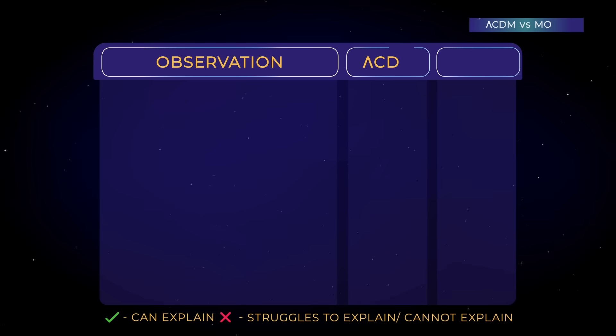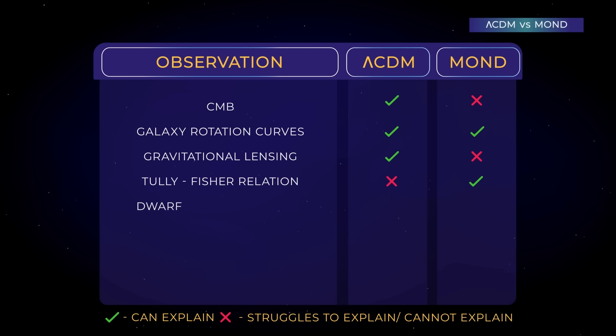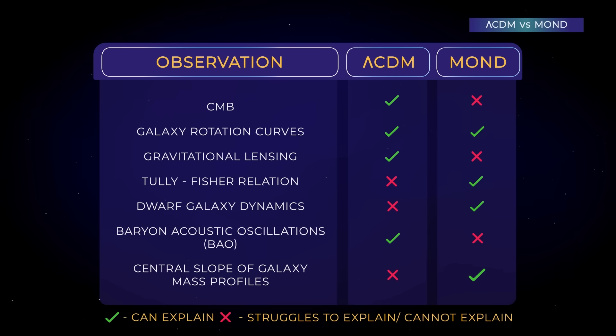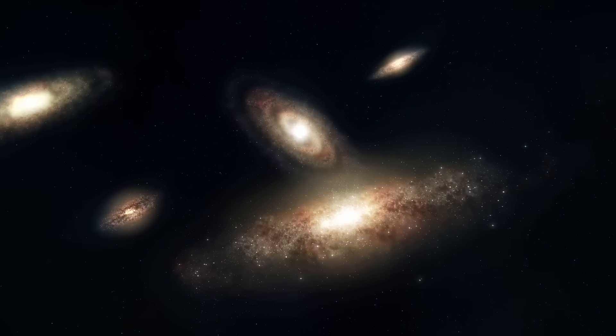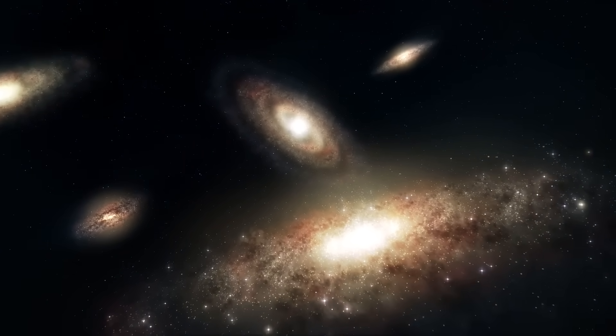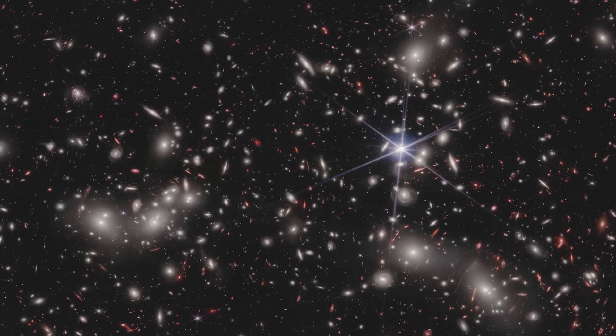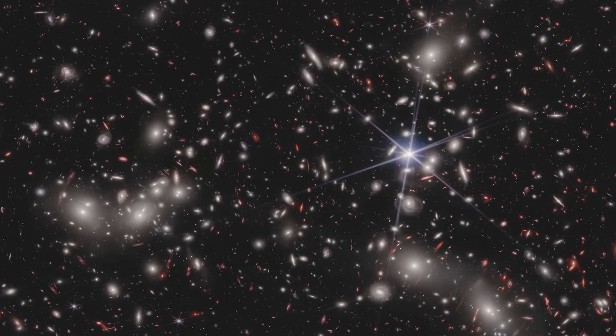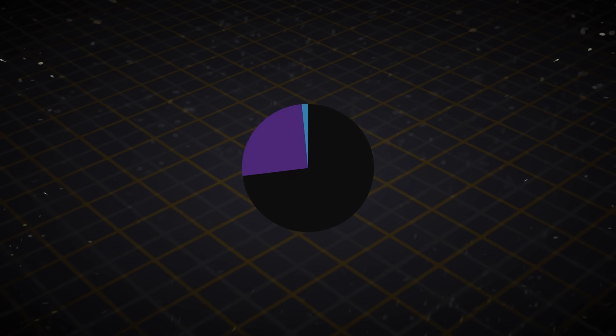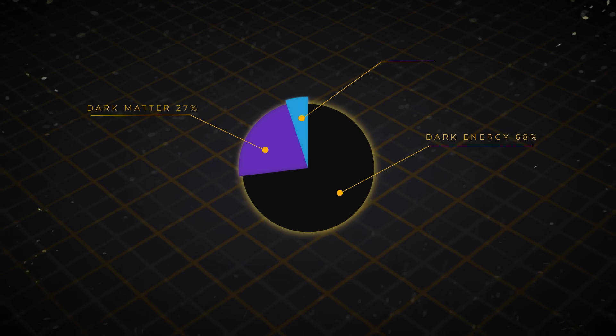The tension between these two theories remains unresolved because some cosmic observations support MOND, while others align with the LCDM model. As a result, there is no clear winner in the debate between these two competing ideas, leaving us with an ongoing mystery about the true nature of the universe. The KBC Void's discovery indicates that some cosmological principles may need to be revised or abandoned in light of new evidence. If the universe exhibits significant local variations in density, it could necessitate a re-evaluation of fundamental cosmological assumptions and models, including those related to dark energy and the formation of cosmic structures.